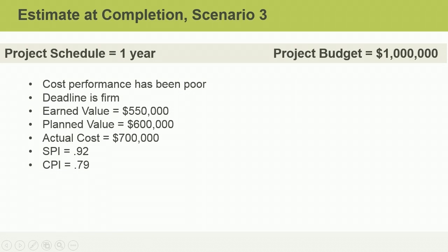In scenario number three, we must assume poor cost performance to date and a fixed project deadline. If this is the situation with your project, you will use the one EAC formula that includes both CPI and SPI. No other EAC formula uses the SPI, so the reference to your deadline being firm is a good indicator to use this formula.